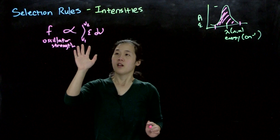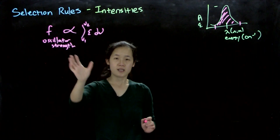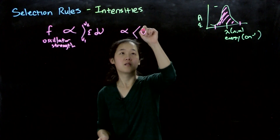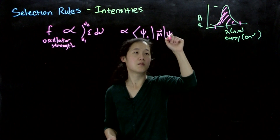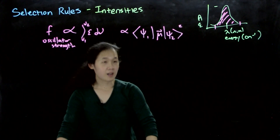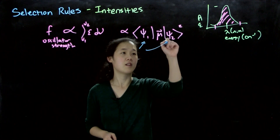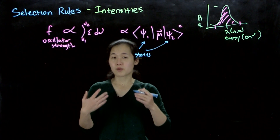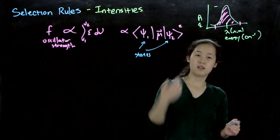This is what you get from your data, but from quantum mechanics, the oscillator strength F is also proportional to the transition dipole moment integral squared. These are the wave functions of the states you're going from and going to. For an electronic absorption transition, we're going from the ground state ψ₁ to the excited state ψ₂, and which excited state that is depends on your term symbol.